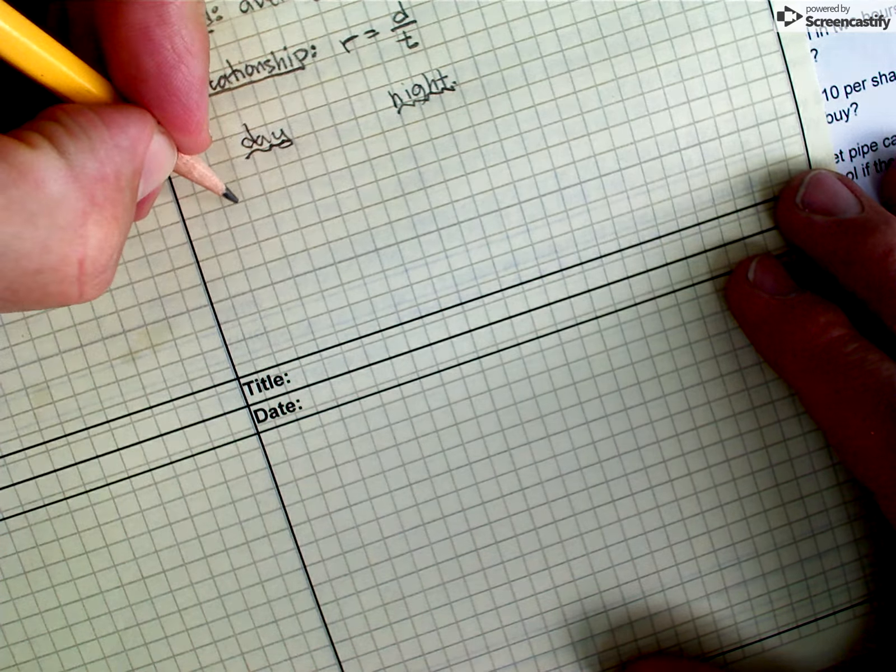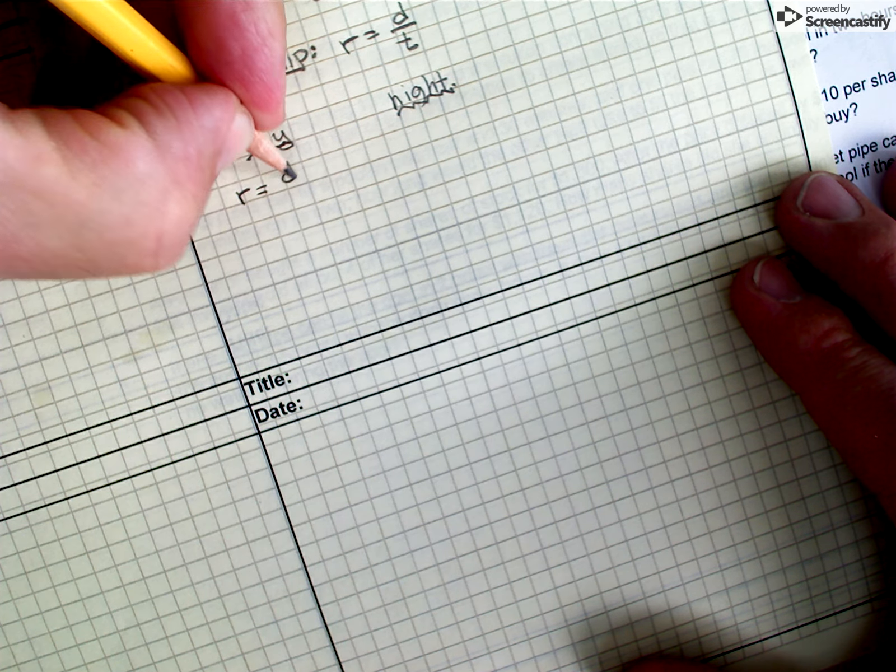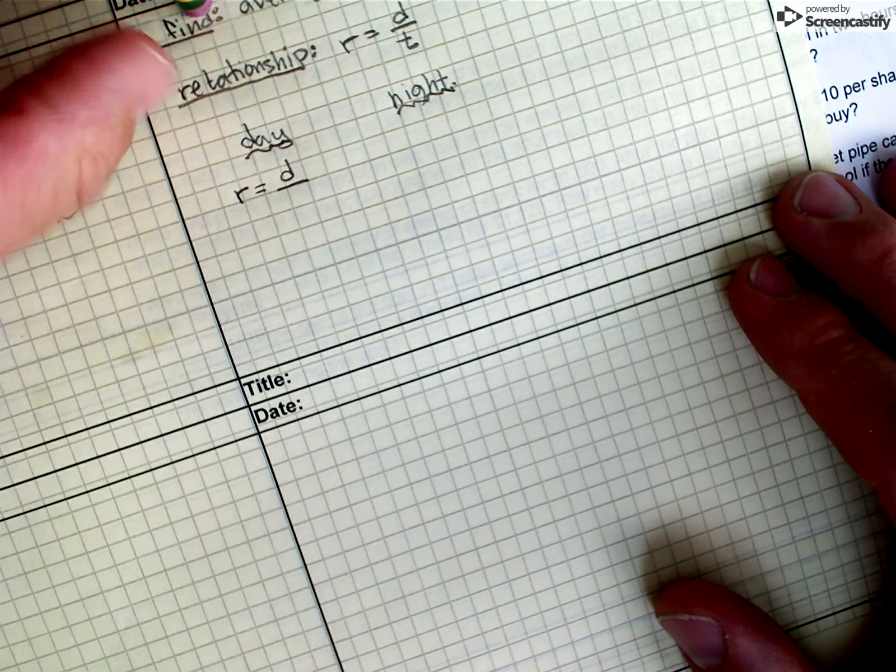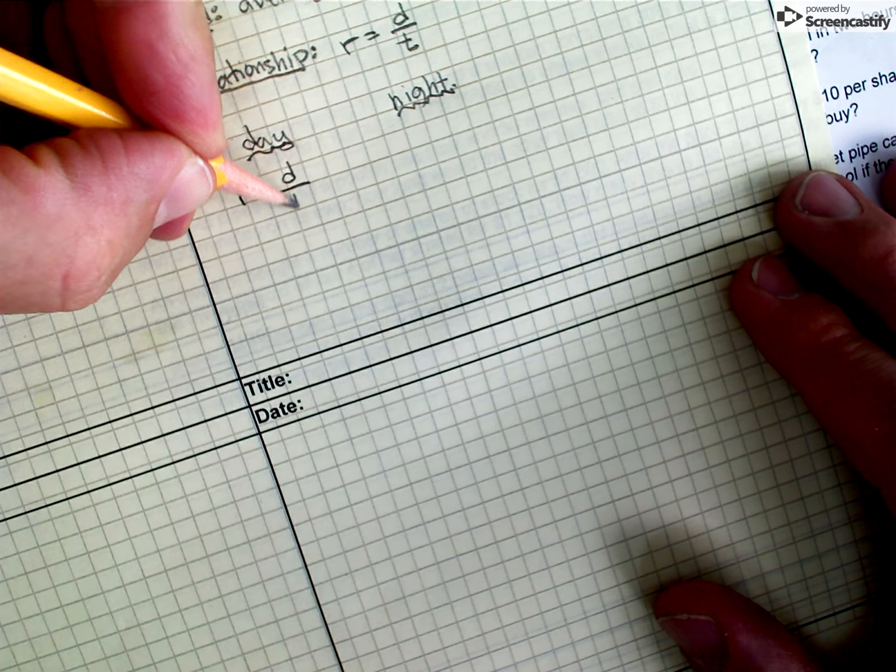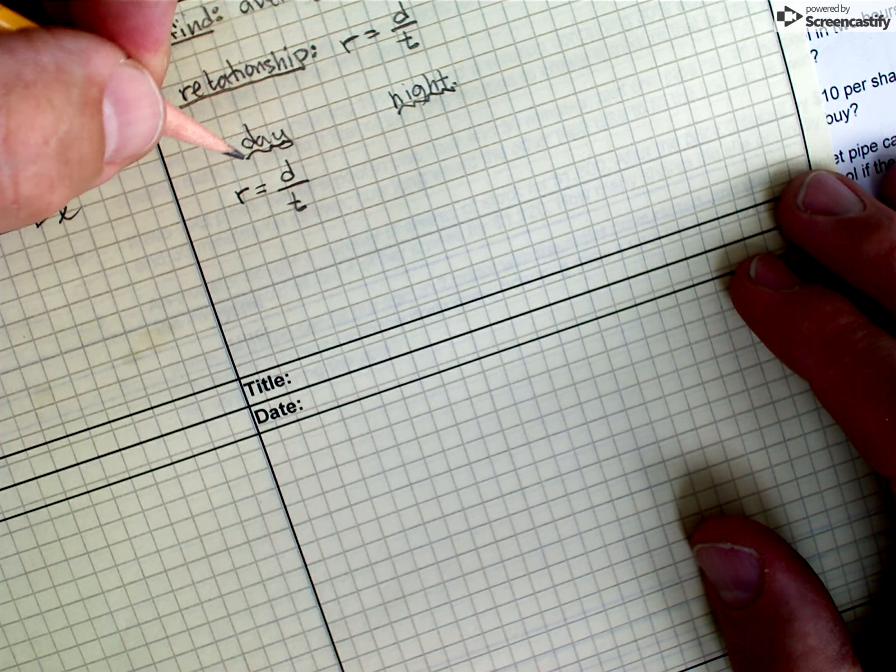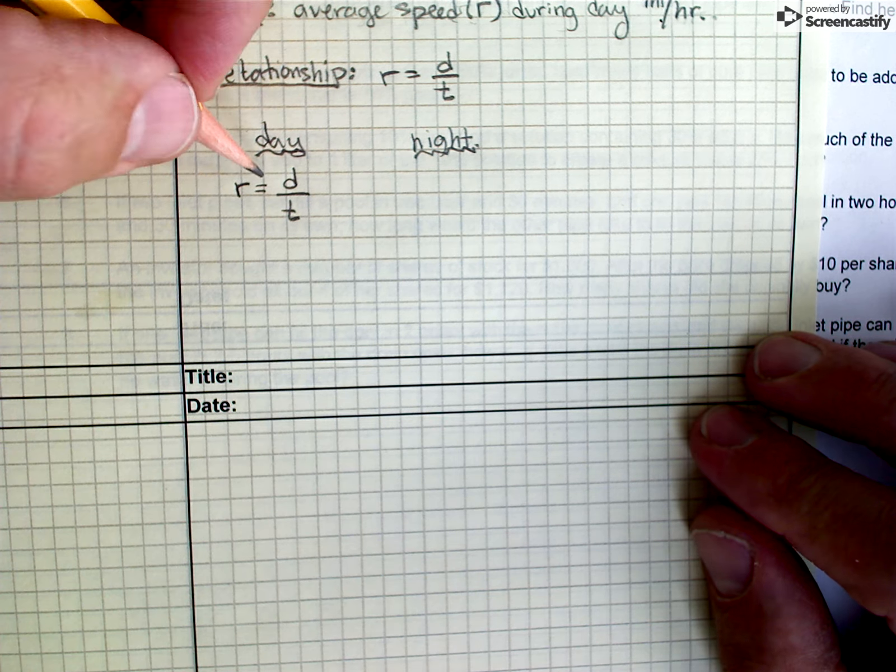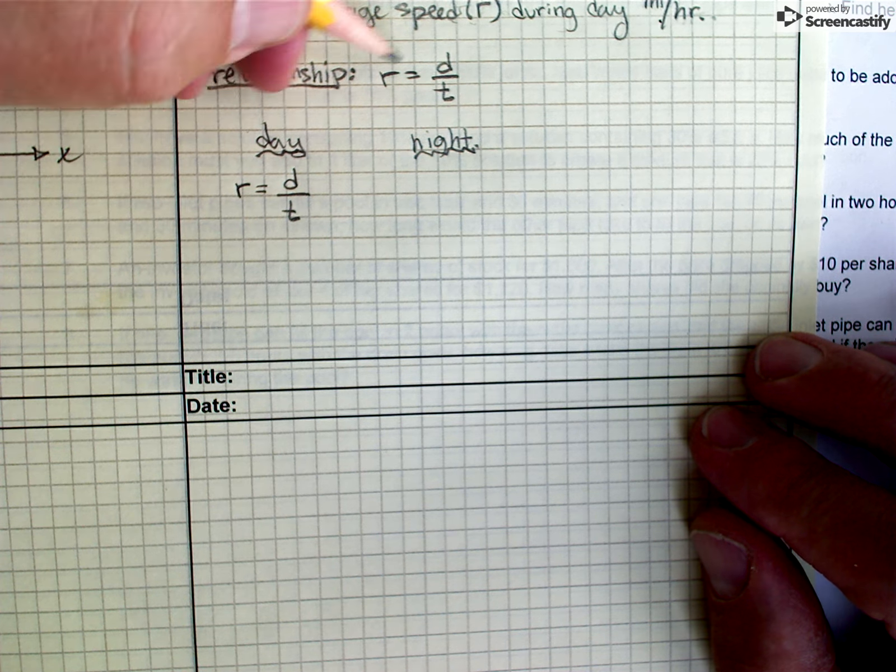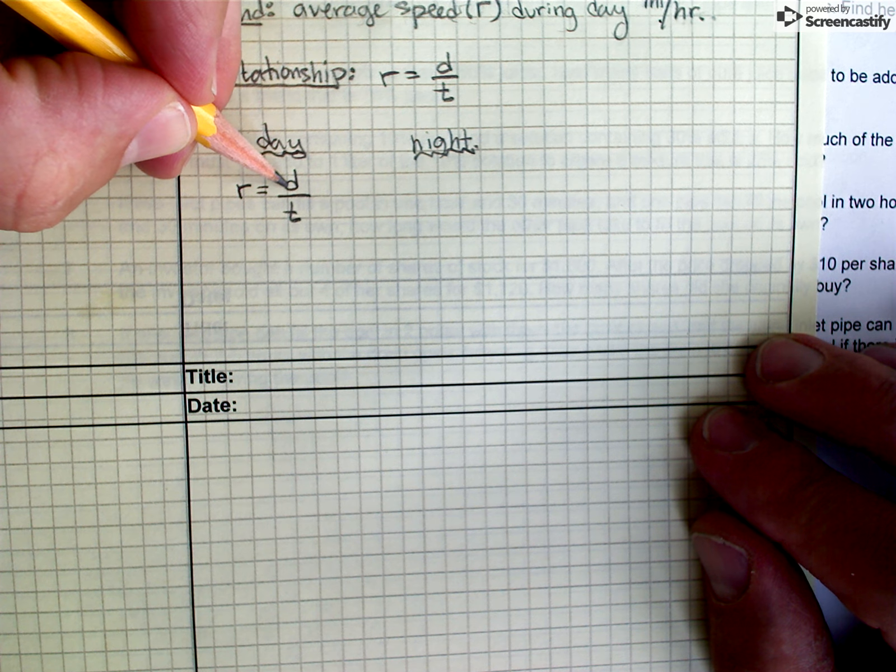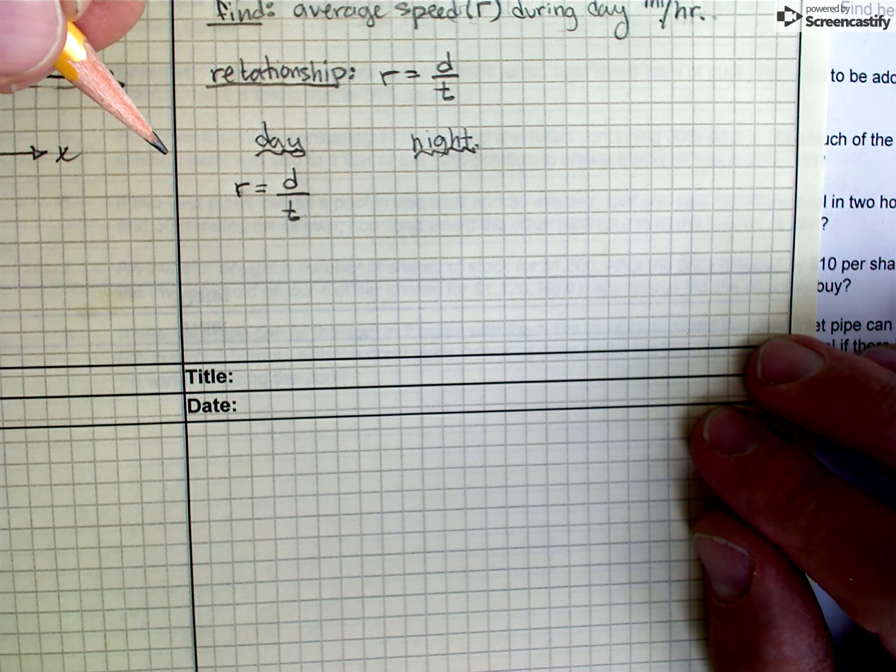And so during the day, I know that the rate, which is the thing that I'm trying to find, is just equal to the distance, 120 miles, divided by however long it takes. And I don't know how long it takes to do that trip. So really, I've written this equation here. It's really just a copy of this thing. But during the daytime, I know it's 120 miles here, but I don't know R or T. So I have two unknowns.